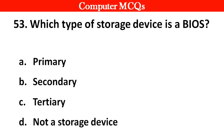Next question: Which type of software device is BIOS? Options A. Primary, B. Secondary, C. Tertiary, D. Not a storage device. Right answer is option A: Primary.